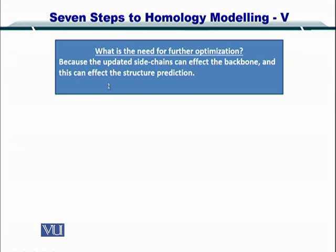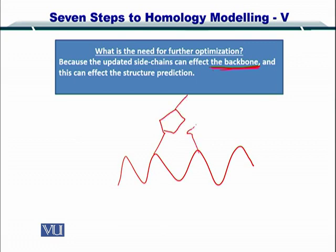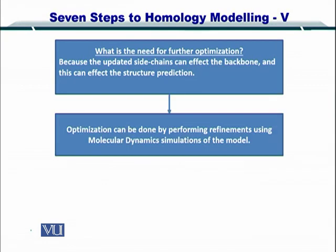The updated side chains can affect the backbone. For instance, if you have an interaction between two rotamers, this needs to be optimized by shifting one rotamer to an alternative conformation and removing the clash. This optimization must be performed on the full backbone, and that can only be done in a simulation where you consider the entire backbone along with all the rotamers and loops. The technology that deals with such optimizations is called molecular dynamics.